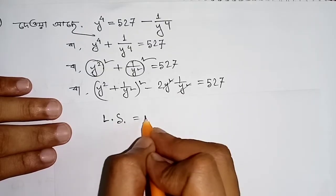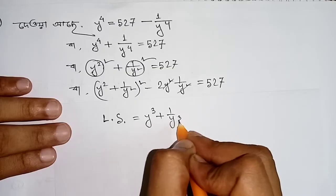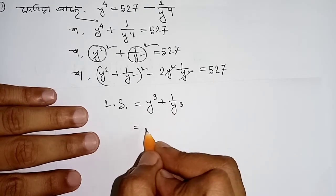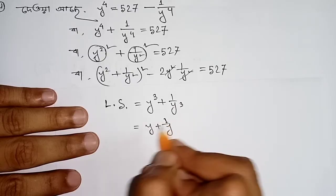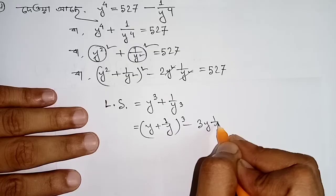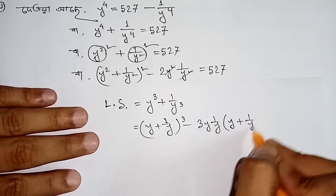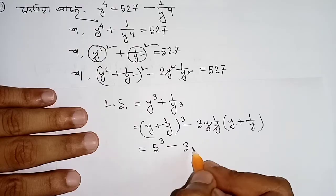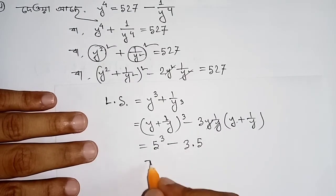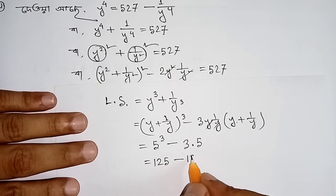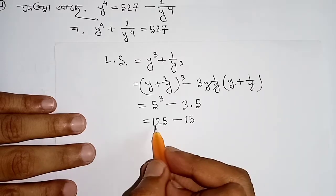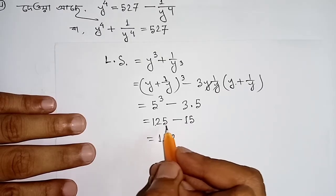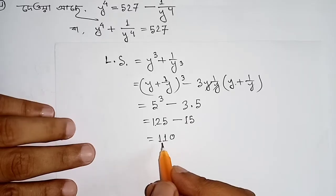The left side was y cube plus 1 by y cube. Now using a cube plus b cube equals y cube plus 1 by y cube, which equals y plus 1 by y whole cube minus 3y into 1 by y times y plus 1 by y. We get the value: 5 cubed minus 3 times 5 equals 110.